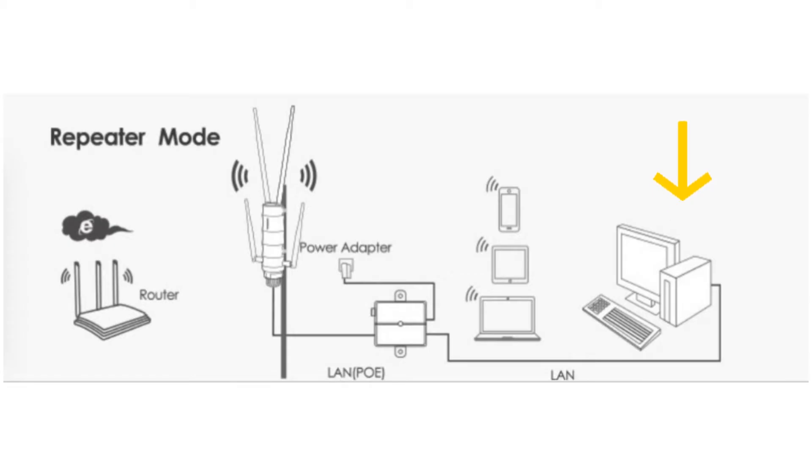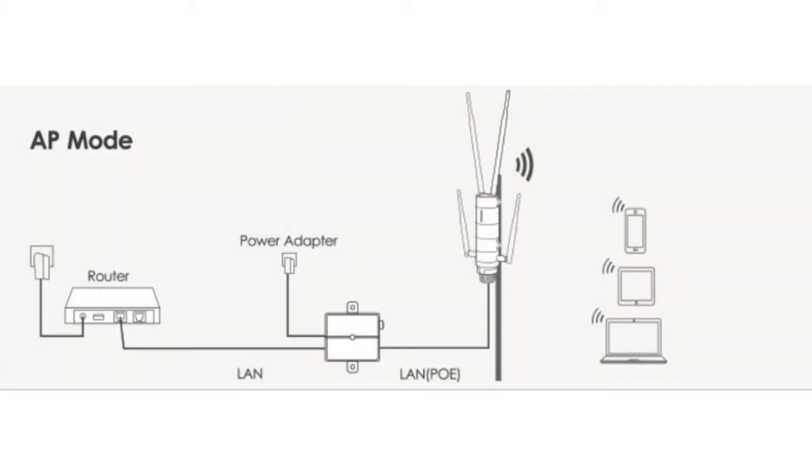Now let's see how to set it up in AP mode. In AP mode, you get better speed than repeater mode, but the drawback is you must keep the ethernet cable connected between the router and extender even after setup.